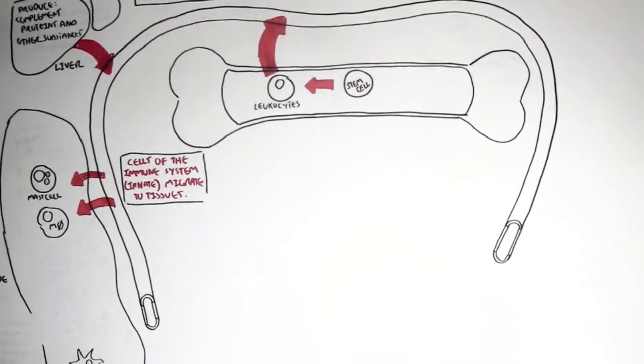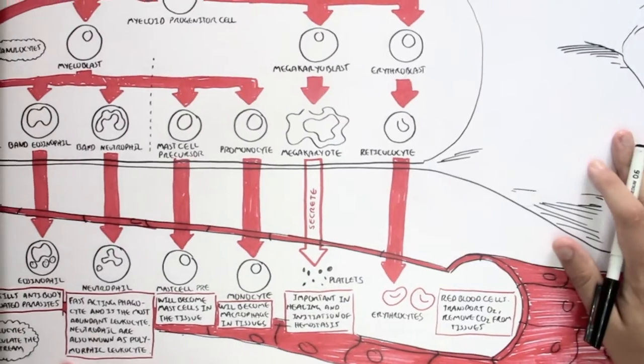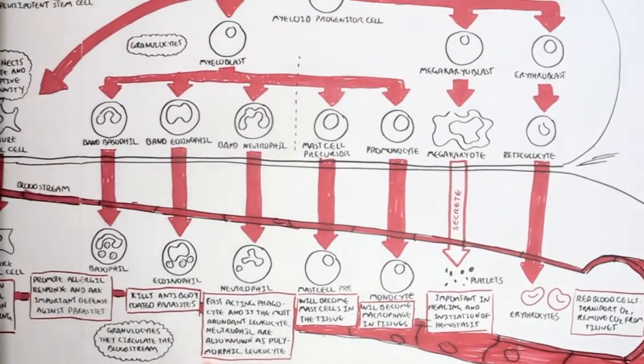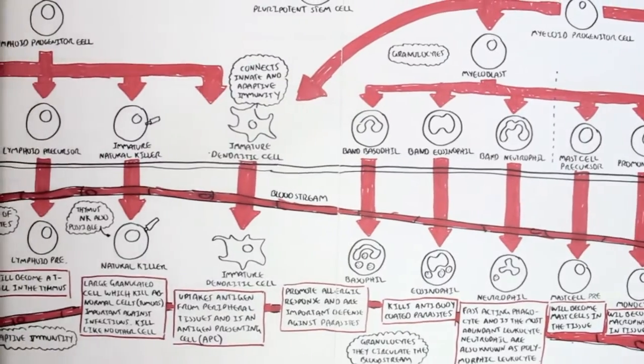Now let's go back to the big immunology map. We learned and saw how the pluripotent stem cells gave rise to all these different cells, and now they are in the bloodstream. Some are immature, some are precursors, and some will just circulate.